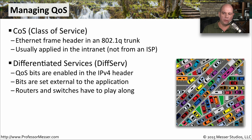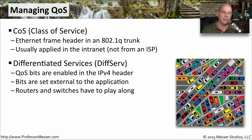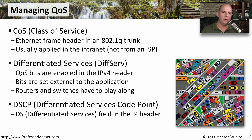Another way to manage quality of service is through something called DiffServ, which stands for Differentiated Services. We are setting bits to define quality of service in the IP header itself. These bits are separate from the application — we're generally defining and setting them up in the network equipment themselves, so the routers and switches have to be able to recognize those and prioritize things appropriately. Another method for defining QoS is also in the IP headers, using something called DSCP, or Differentiated Services Code Point. There's a field in the IP header set aside for DS, or Differentiated Services, so that we can define how the traffic should flow through the network.